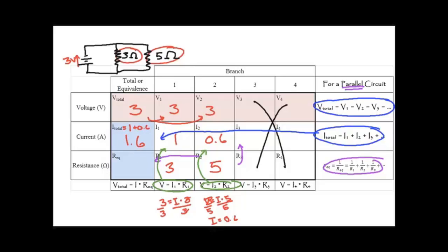So given I know these things, I can figure out the resistance equivalent. Because three equals, I know the current is 1.6 times the resistance. I divide both sides by 1.6, and I get a resistance of 1.88.